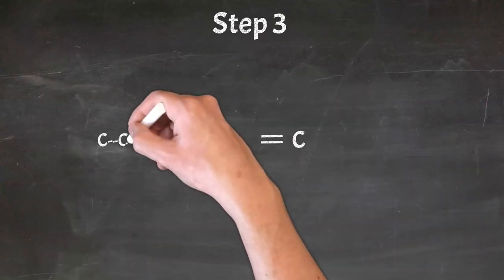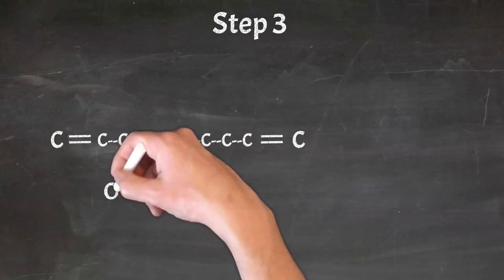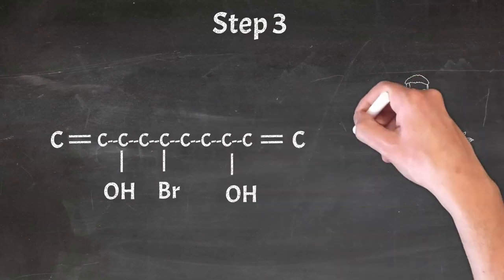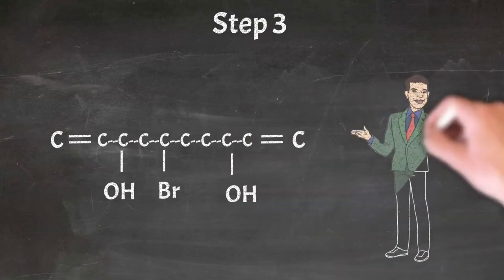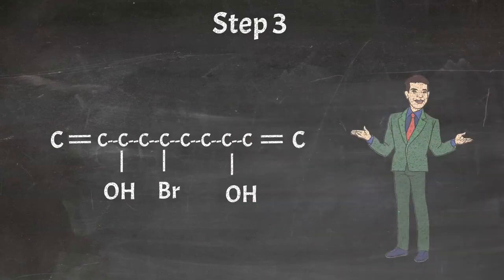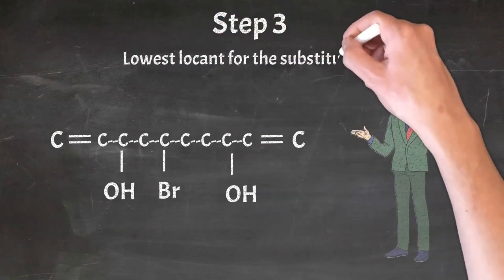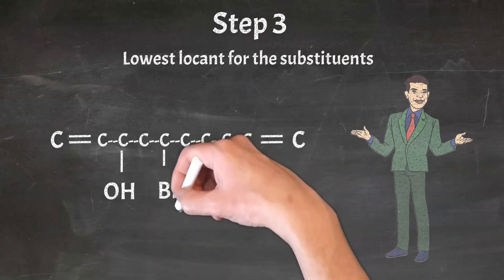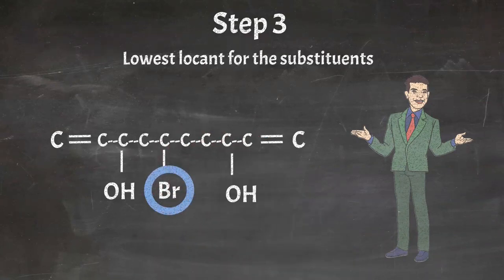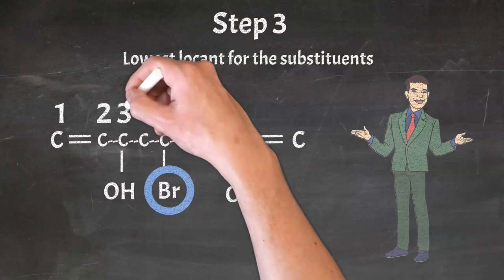If a compound has double bonds at the same positions from both ends, follow rule number 4: number the chain from the end closest to the first substituent so that it gets the lowest locant. This structure has bromine as substituent. Bromine comes at position 5 from the left side while it comes at a higher position from the right end. So we number this chain from the left side.